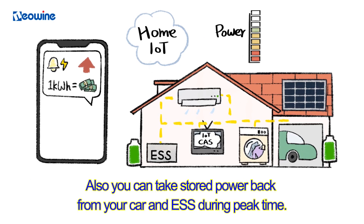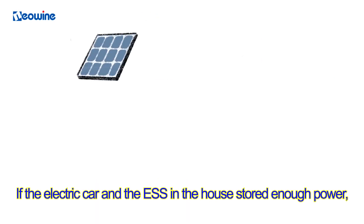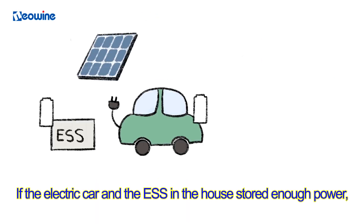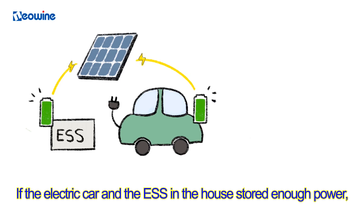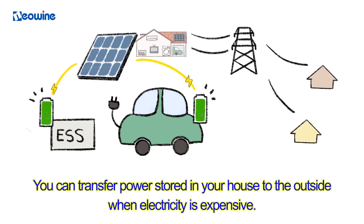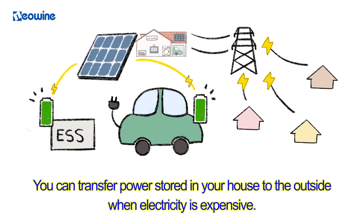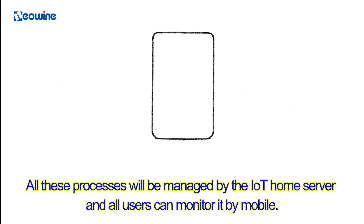Also, you can take stored power back from your car and ESS during peak time. If the electric car and the ESS in the house have stored enough power, you can transfer power stored in your house to the outside when electricity is expensive.